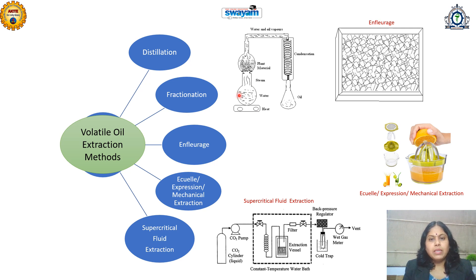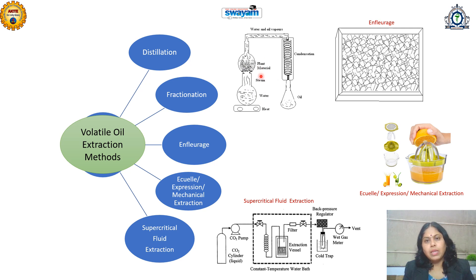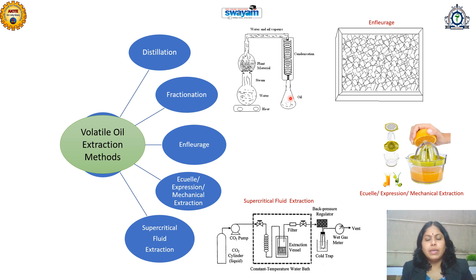Under distillation, the principle is evaporation and condensation. There are three types: water distillation, steam distillation, and water plus steam distillation. This is the diagrammatic representation of water plus steam distillation. Here you can see that water is getting boiled and steam is passing through the plant material, rupturing the cell walls and the oil glands. The oil evaporates along with the water, is then condensed, and collected into the container. Water distillation is simpler compared to steam distillation, while water and steam distillation is used for complete and exhaustive extraction of essential oils.